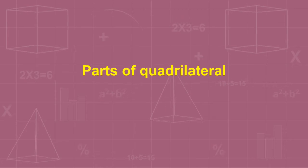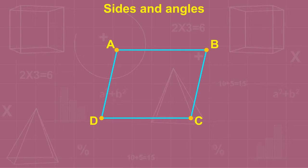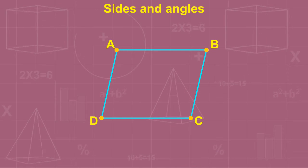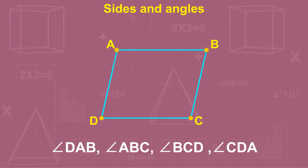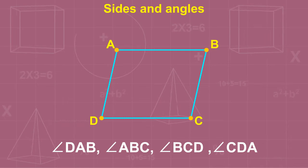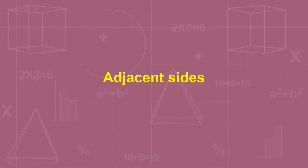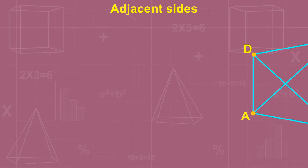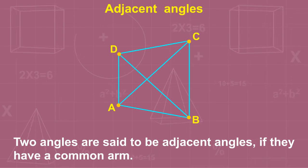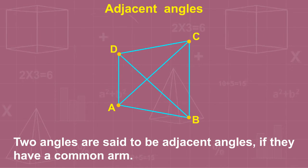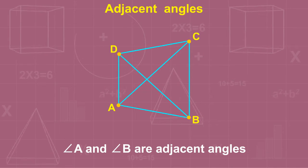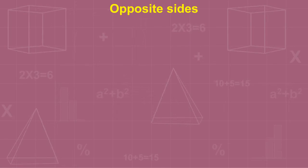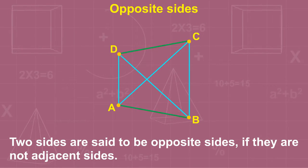In quadrilateral ABCD, the four line segments AB, BC, CD, and DA are called its sides, and the four angles — angle DAB, angle ABC, angle BCD, and angle CDA — are known as its angles. Two sides are said to be adjacent if they have a common endpoint. Two angles are said to be adjacent angles if they have a common arm. In quadrilateral ABCD, angle A and angle B are adjacent angles as they have common arm AB. Two sides are said to be opposite sides if they are not adjacent sides.